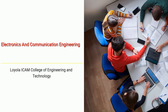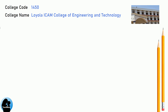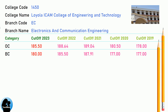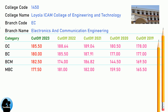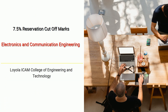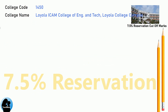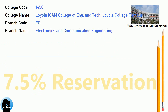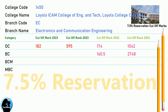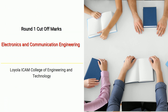BMA cutoff for Loyola ICOM College of Engineering and Technology in Electronics and Communication Engineering. DNA 7.5 reservation cutoff for Loyola ICOM College of Engineering and Technology in Electronics and Communication Engineering.